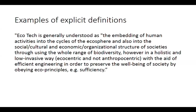One example of line-by-line coding is an explicit definition of ecotechnology — one of the most rich ones, which had six themes within it. It read: 'Ecotech is generally understood as the embedding of human activities into the cycles of the ecosphere and also into the social, cultural and economic organizational structure of societies through using the whole range of biodiversity. However, in a holistic and low invasive way, ecocentric and not anthropocentric, with the aid of efficient engineering in order to preserve the well-being of society by obeying eco principles, e.g. sufficiency.' This was one of the better definitions we found.